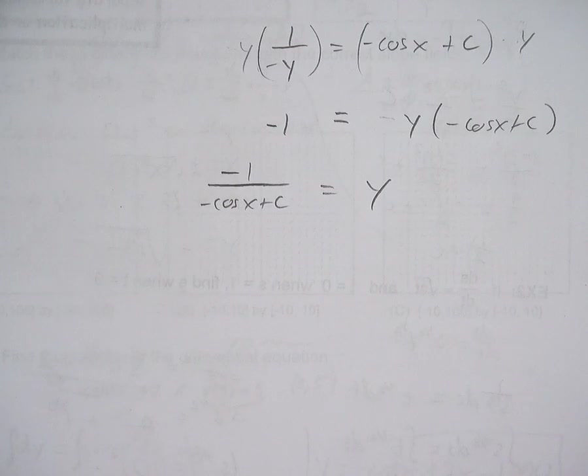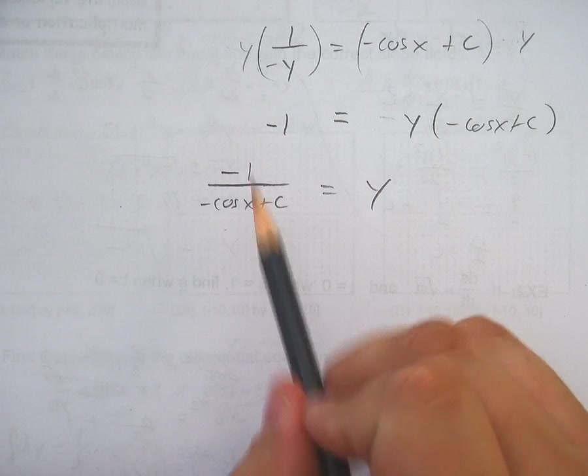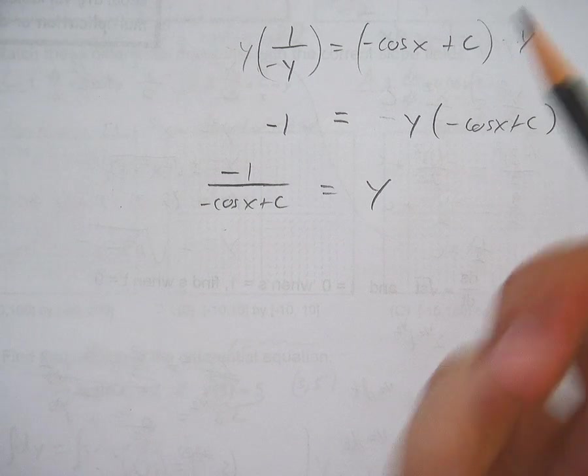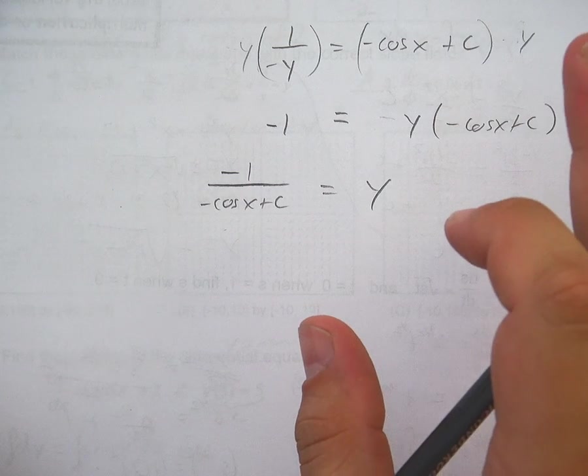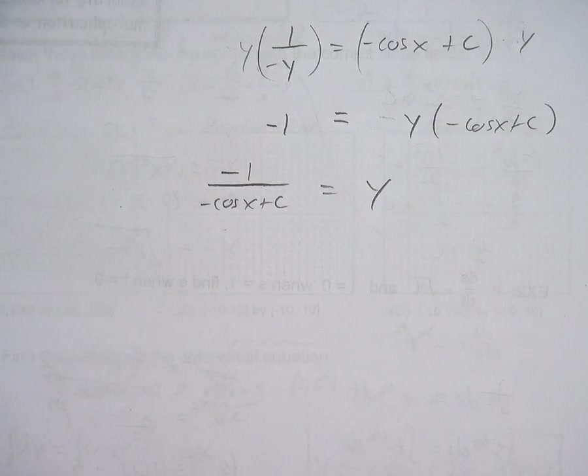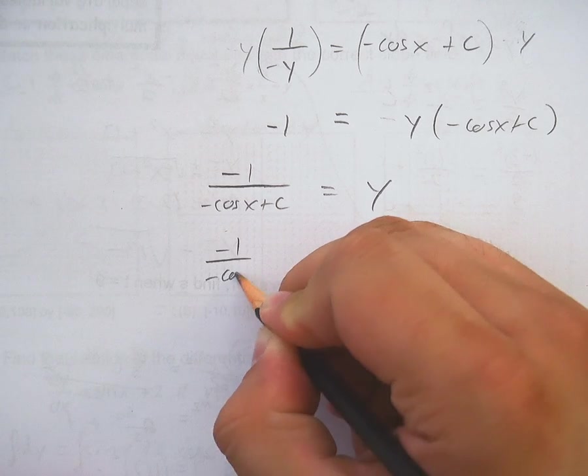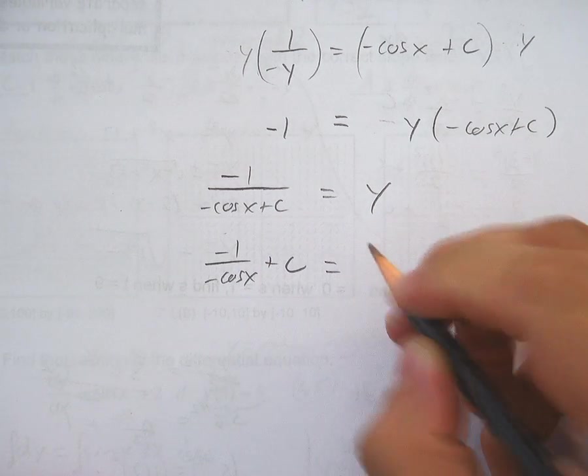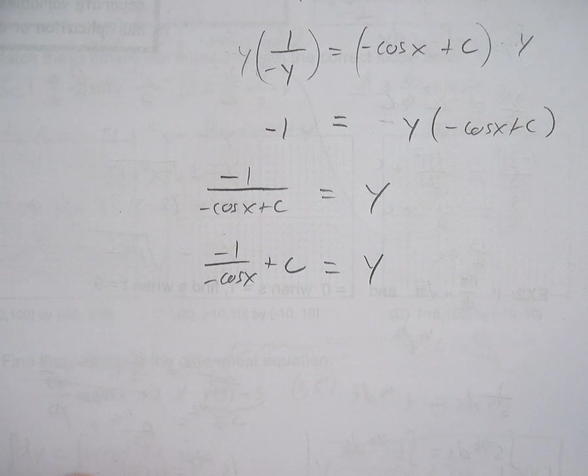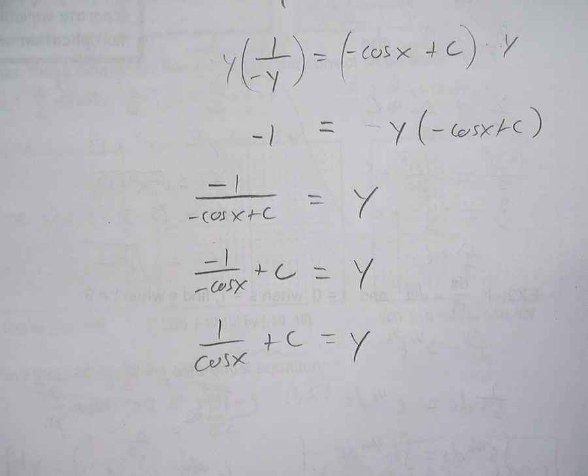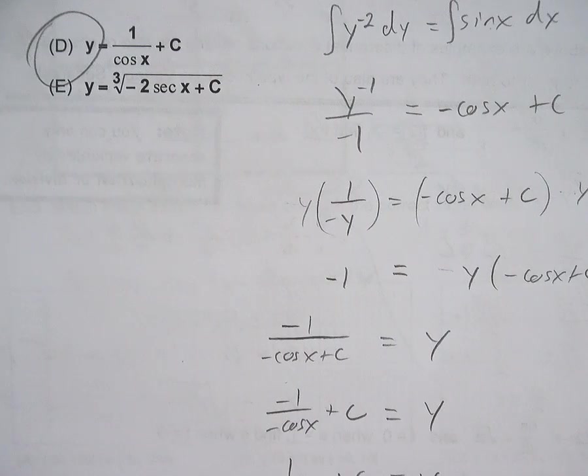And the only part that might trip some people up is separating out this fraction right here. Because the c bit really doesn't matter. The fact that it's c is completely irrelevant. So I can actually split off that plus c. I can actually split off plus c and call this -1 over -cosine x plus c. Because c is irrelevant. It doesn't matter where c goes. The fact that it's in the denominator there is completely irrelevant. Split it up. Who cares? So this is 1 over cosine x plus c. And that is the answer.